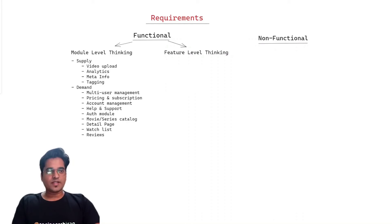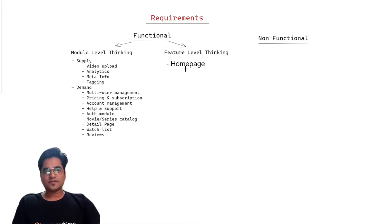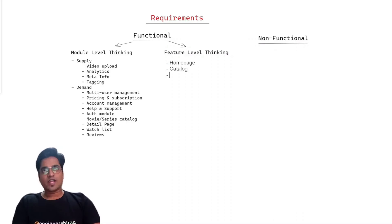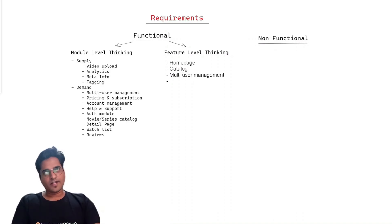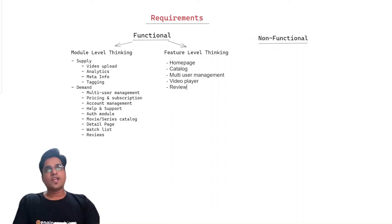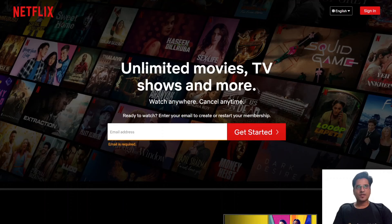Let's dive into feature-level thinking. We'll cover areas related to the home page, catalog-related features, the detail page, multi-user management, the video player, and the review system where you can do likes and comments.